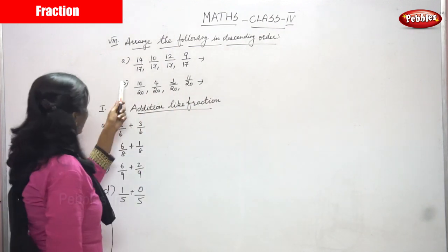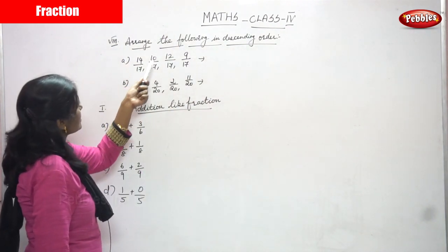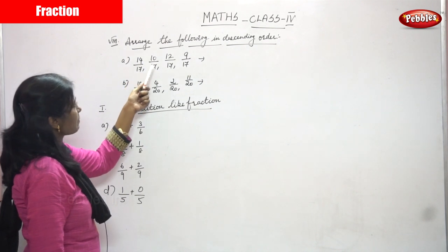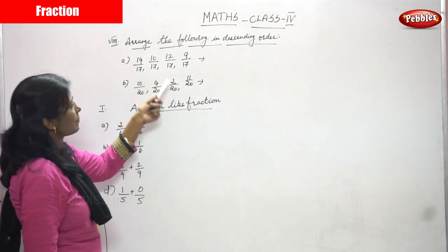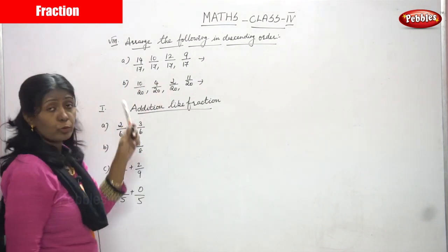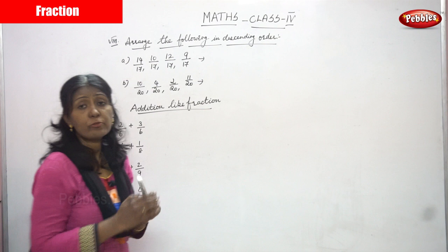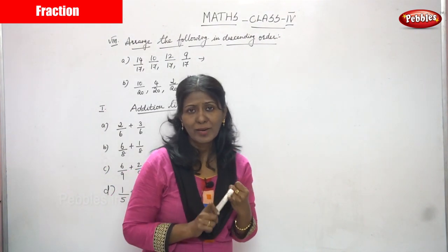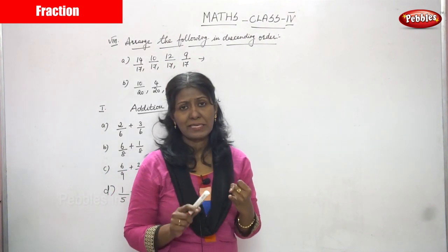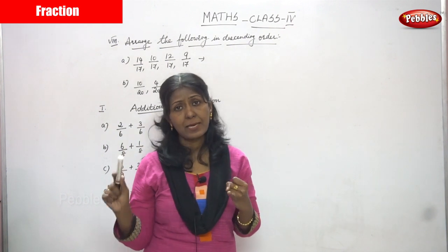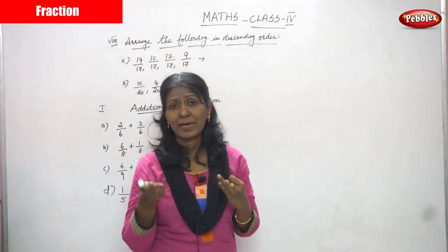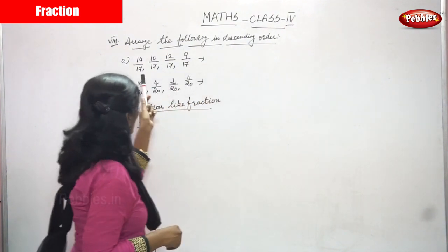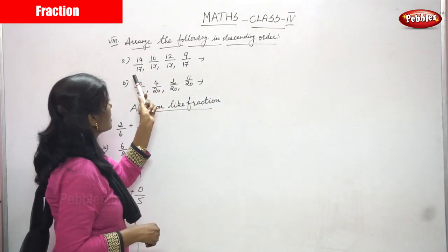The first problem is: 14 by 17, 10 by 17, 12 by 17, 9 by 17. I've told you many times — first you have to look at the denominators. If the denominators are same, you have to look at the numerators.